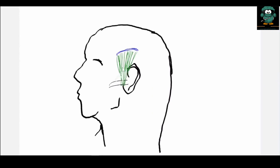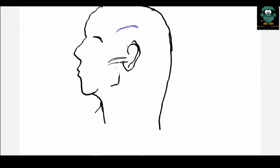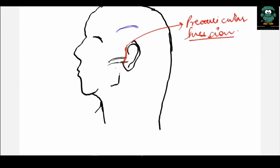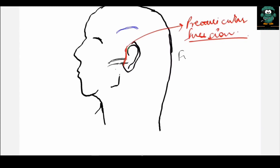To expose the TMJ region, a preauricular incision is given, and an incision is made on the periosteum just lateral to the TMJ capsule, exposing the condylar region. At this point, if wider exposure is needed, there are two approaches available.